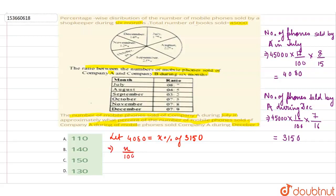So when we solve this we get x by 100 into 3150 is equal to 4080, or x is equal to 4080 into 100 by 3150.